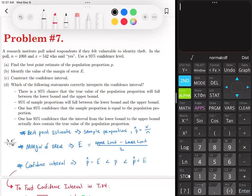In the poll, n is equal to 1068, so that's your sample size. X is equal to 542, so X equals 542 is who said yes. Use a 95% confidence level.